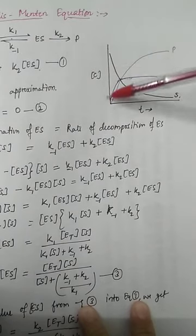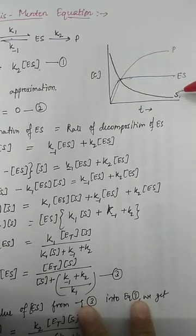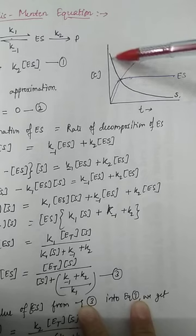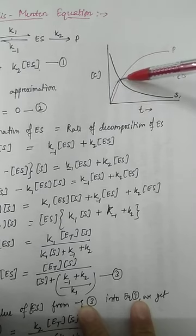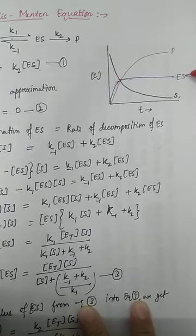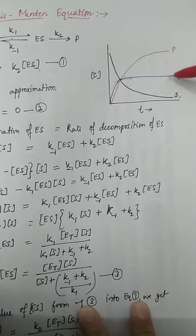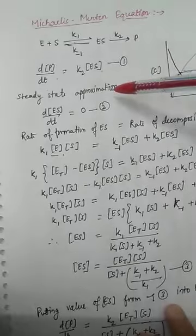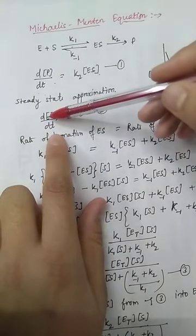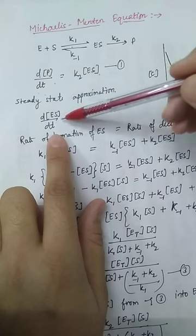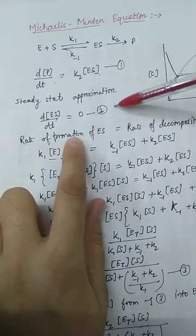We can understand this from the graph, which is a plot of concentration with respect to time. The concentration of substrate decreases over the course of the reaction, the concentration of product increases, but the concentration of the intermediate initially increases and then becomes constant. This constant concentration of ES represents the steady-state approximation.